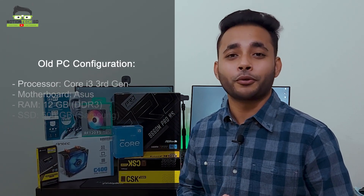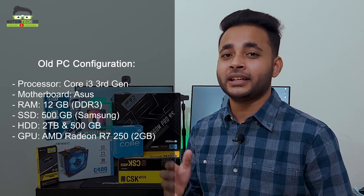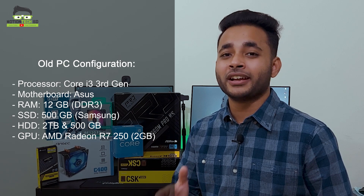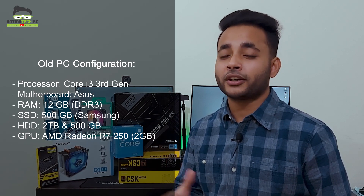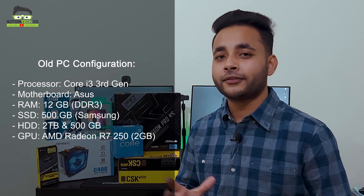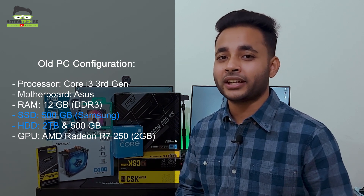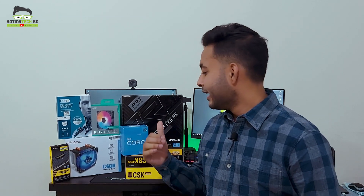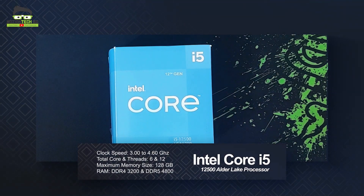Our old configuration had a Core i3 3rd gen processor. For the new build, we are going to start with the processor. We will use the Core i5-12500 Alder Lake processor. The processor clock speed is 3GHz to 4.6GHz, total cores are 6, and total threads are 12.